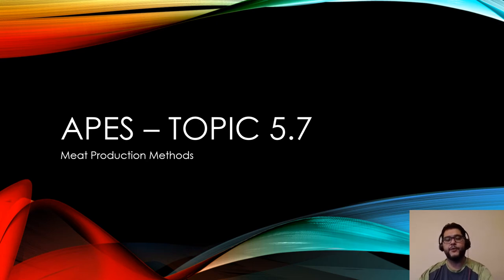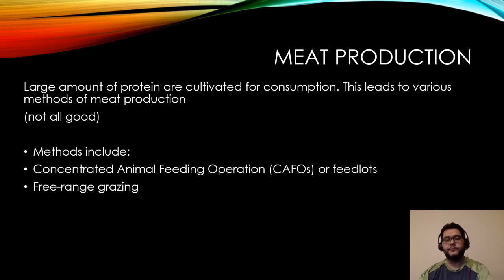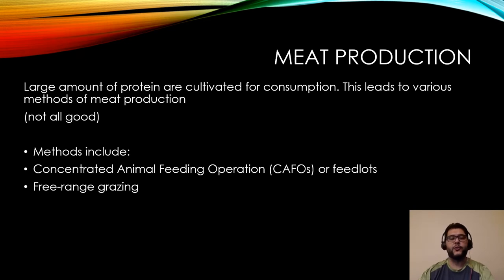Hey guys, this is Mr. V and this is APES review video topic 5.7: meat production methods. Looking at meat production, there's a large amount of protein that can be cultivated and used for consumption, so this is going to lead to humans finding different ways to grow their meat. Spoiler alert — it's not that great. One of the main methods we use is concentrated animal feeding operations, shortened as CAFOs or feedlots, and another method is free-range grazing. We'll look at the consequences, upsides, and downsides of both.